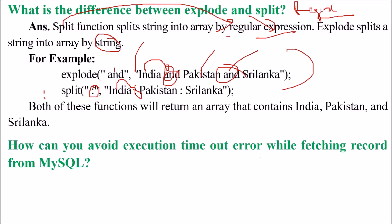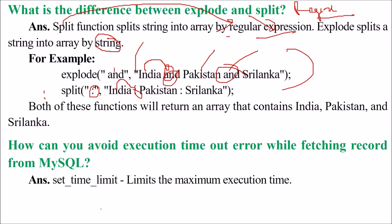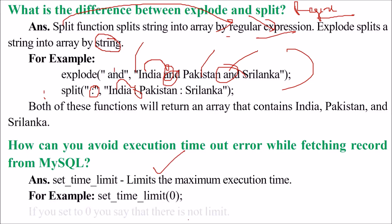How can you avoid execution timeout error while fetching records from MySQL? Because once your records are being fetched, it may take some time if your record numbers are high. You can just use set_time_limit. This limits the maximum execution time. You can set set_time_limit to zero, which means there is no limit.